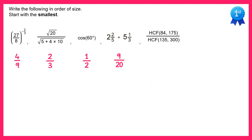And finally on to the last one. If you find the highest common factor of 84 and 175 you get 7, and the highest common factor of 135 and 300 is 15.